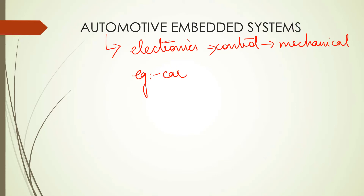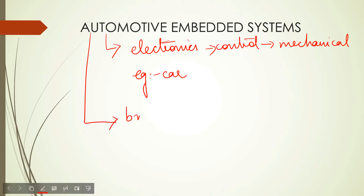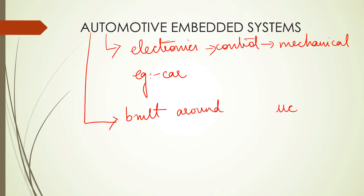How is your automotive embedded system built? Automotive embedded system is usually built around microcontrollers. You know what a microcontroller is — you have studied it previously. Your microcontroller is a system on a chip; it's a small system on a chip. Your automotive embedded system is either built around a microcontroller or a DSP chip.